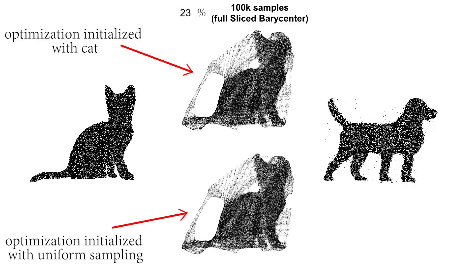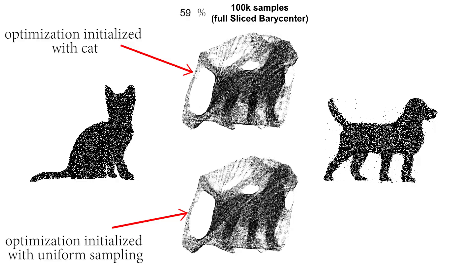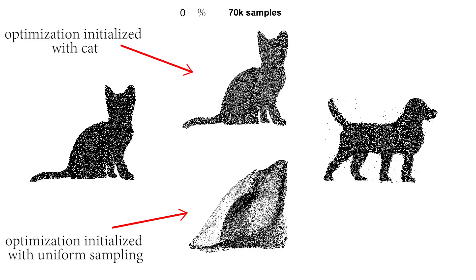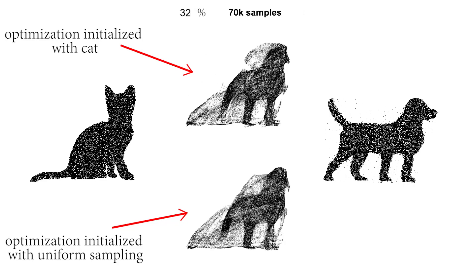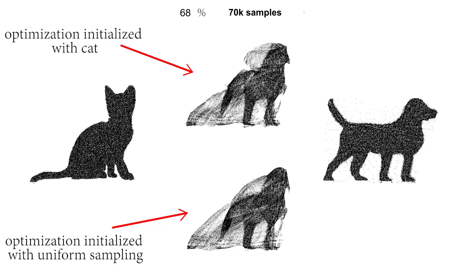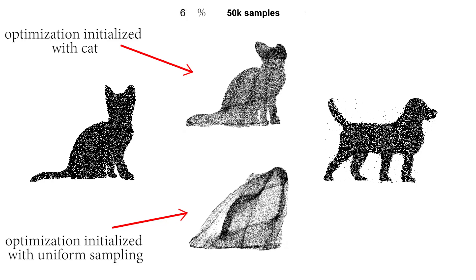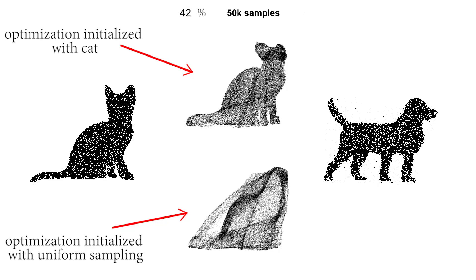On the top, we initialized the optimization process with samples from the cat, while in the bottom we used a random initialization. As we can see, reducing the number of points in the barycenter exhibits the lack of convexity of the energy involved, since both results become different.